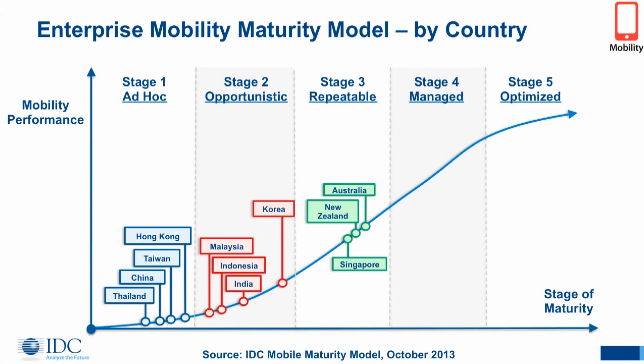We also broke that down by country to see which countries were actually leading the way and which ones were lagging behind. In the earliest phases, you had Thailand, which is still at the bottom of the maturity model. China, Taiwan, and Hong Kong you would expect to be a little more advanced; however, they lack the mobility strategy, the security implementations, and device management functionality. While these three countries love mobile devices and leverage them, it's not being leveraged inside the enterprise.